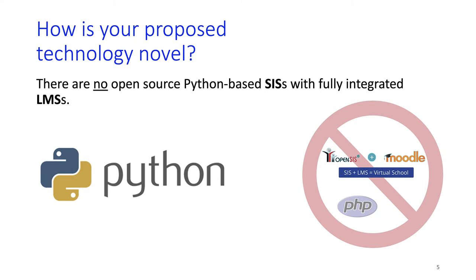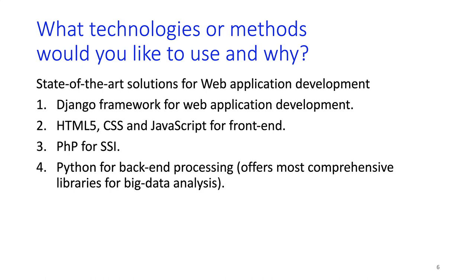Crimson SIS will be implemented in Python, which has surpassed PHP in adoptions and has superior big data handling and analysis libraries. Crimson SIS will be implemented in Django, which is a popular native Python-based framework. Standard HTML5, CSS, and JavaScript are integral throughout for the user interface.